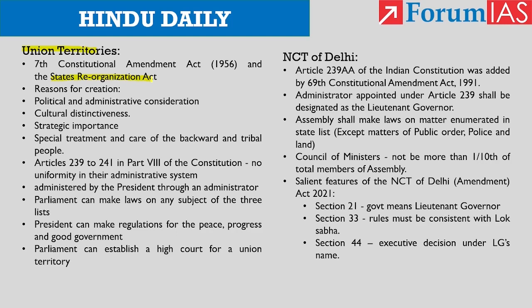Currently there are eight union territories: Andaman and Nicobar, Chandigarh, Dadra and Nagar Haveli and Daman and Diu, National Capital Territory of Delhi, Jammu and Kashmir, Lakshadweep, Ladakh, and Puducherry. Union territories have been created for a variety of reasons — political and administrative considerations, cultural distinctiveness, strategic importance such as Andaman and Nicobar and Lakshadweep, and special treatment and care of backward and tribal people.